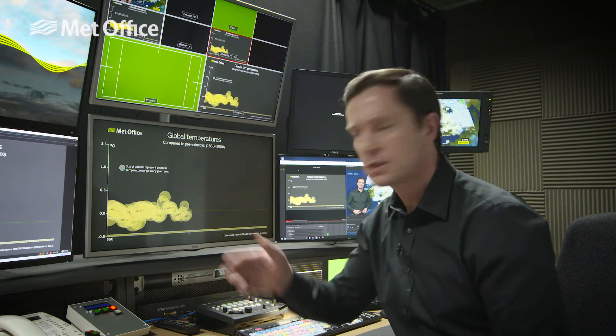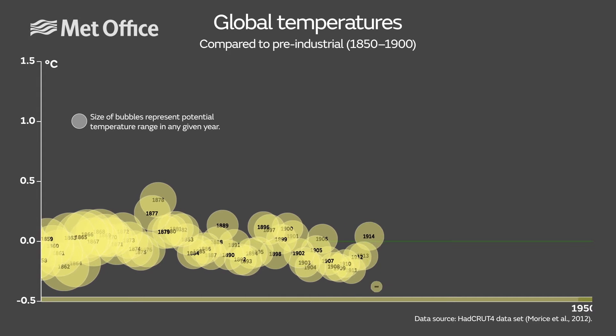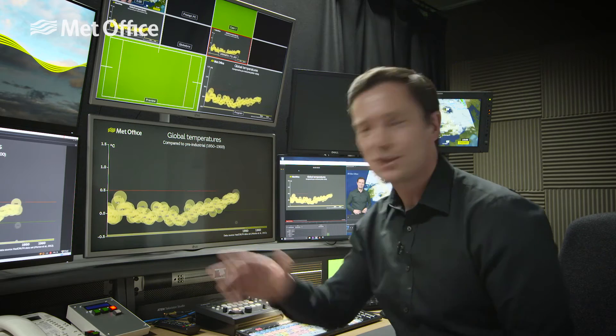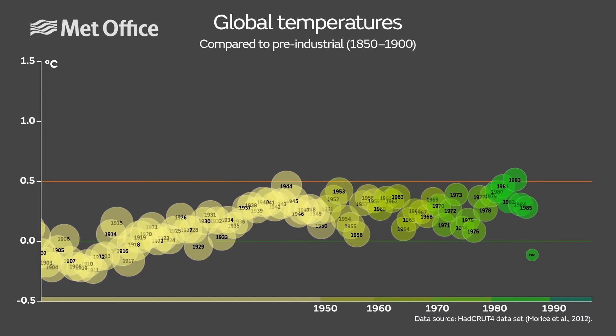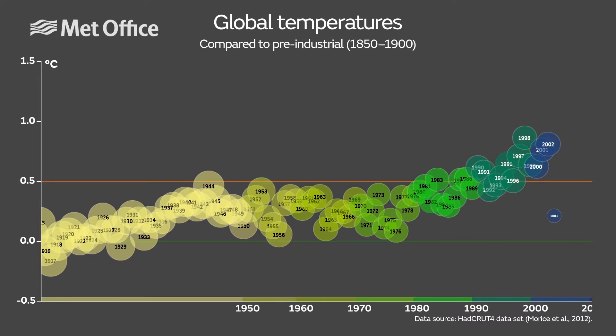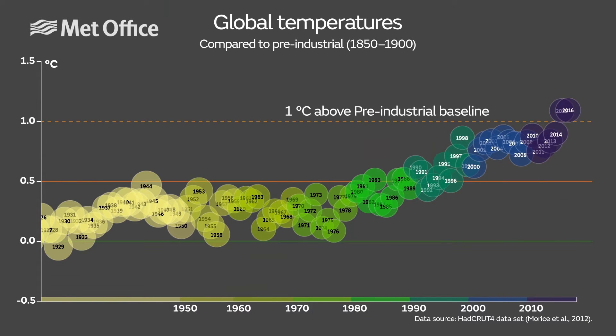As we run through time the circles get smaller, particularly with advancements as we go through into the 20th century. What this graph is really showing is the rise in temperatures over the past 50 or 60 years as humans have started to influence our atmosphere more and more, culminating in the past two years being the warmest on record and around about a degree warmer than we were back in the 1850s.